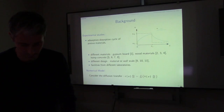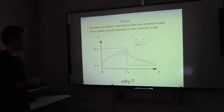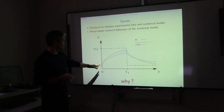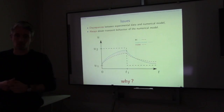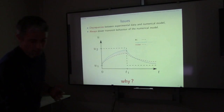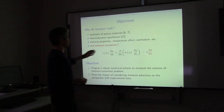In all these studies, when they compare the numerical model results with experimental data, they always observe discrepancies: the numerical model always shows a slower behavior compared to the experimental data. Some people try to adjust by considering hysteresis in the material, and discuss many physical effects related to material properties — but no one studies the moisture convection term.